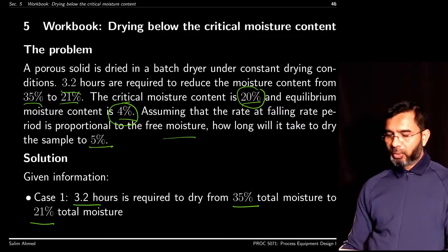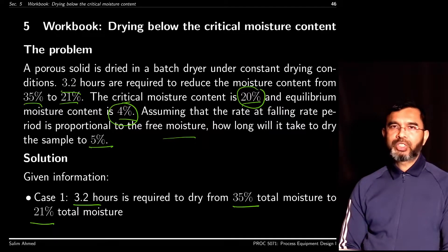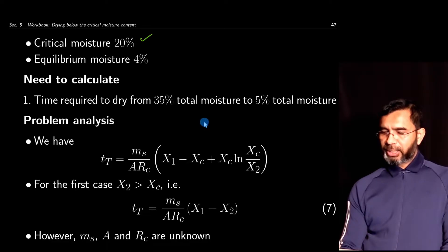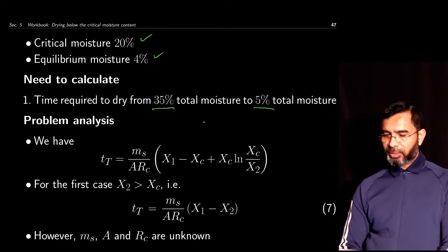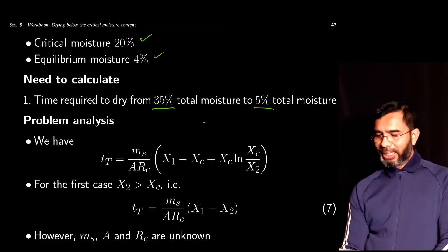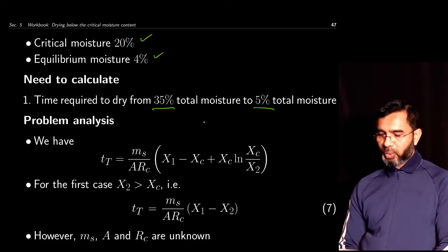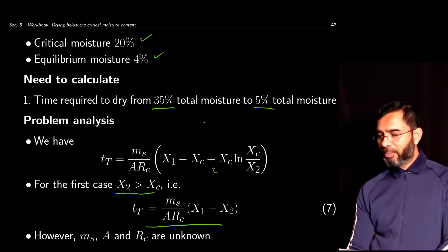Remember that all these values are given in terms of total moisture. The critical moisture is 20% and equilibrium moisture is 4%. We need to calculate the time to dry from 35% to 5% total moisture. We have the equation: t_t = (Ms / A·Rc) × [(X1 − Xc) + Xc · ln(Xc / X2)]. For the first case, X2 is greater than Xc, so we use the simplified equation — the logarithmic term is absent — giving t_t = (Ms / A·Rc) × (X1 − X2).